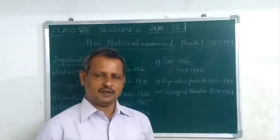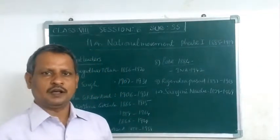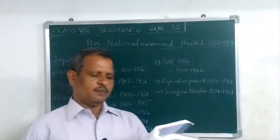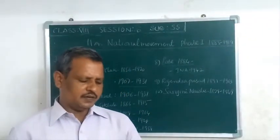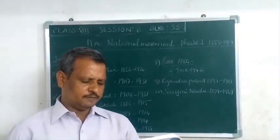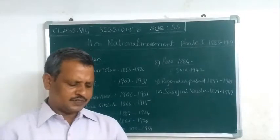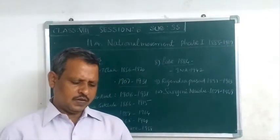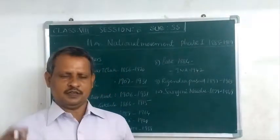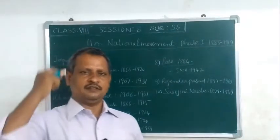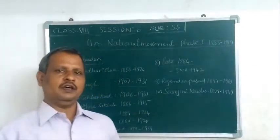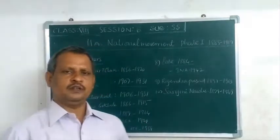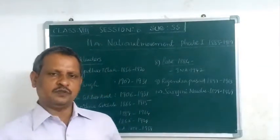The main objective of the INC was to bring national consciousness among the diverse people of India and to unite them. The INC fought against the British and ultimately India got independence. The Indian national movement is divided into three periods.